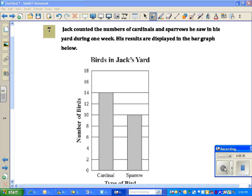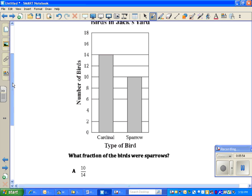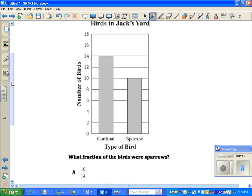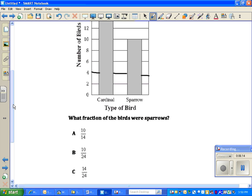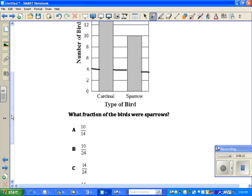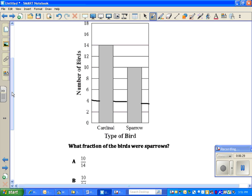Okay, question number seven. Jack counted the numbers of cardinals and sparrows he saw in his yard during one week. His results are displayed on the bar graph below. The title is Birds in Jack's Yard. I need to scroll down and see what's happening here. It's telling me the number of birds. I notice the scale is counting by two. There's a line missing here. Let me just put that in.